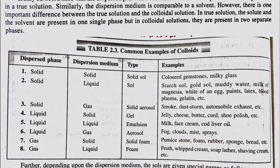Next is solid foam. Solid foam is the type in which the dispersed phase is gas and the dispersal medium is solid. Examples include pumice stone, foam rubber, sponge, and bread.